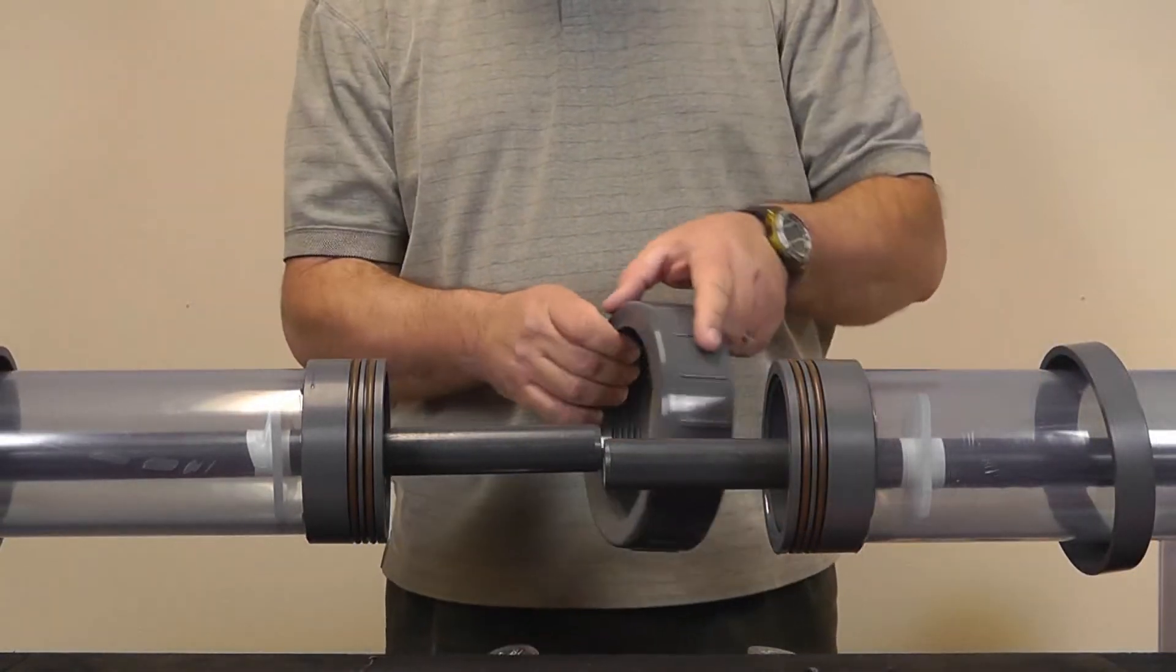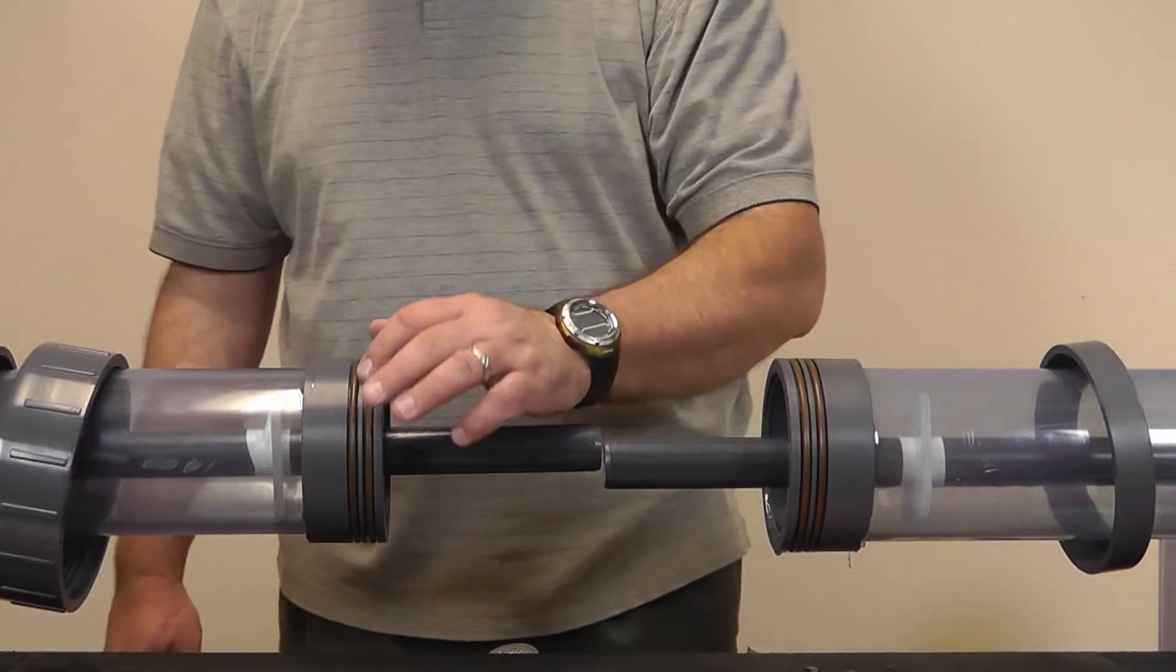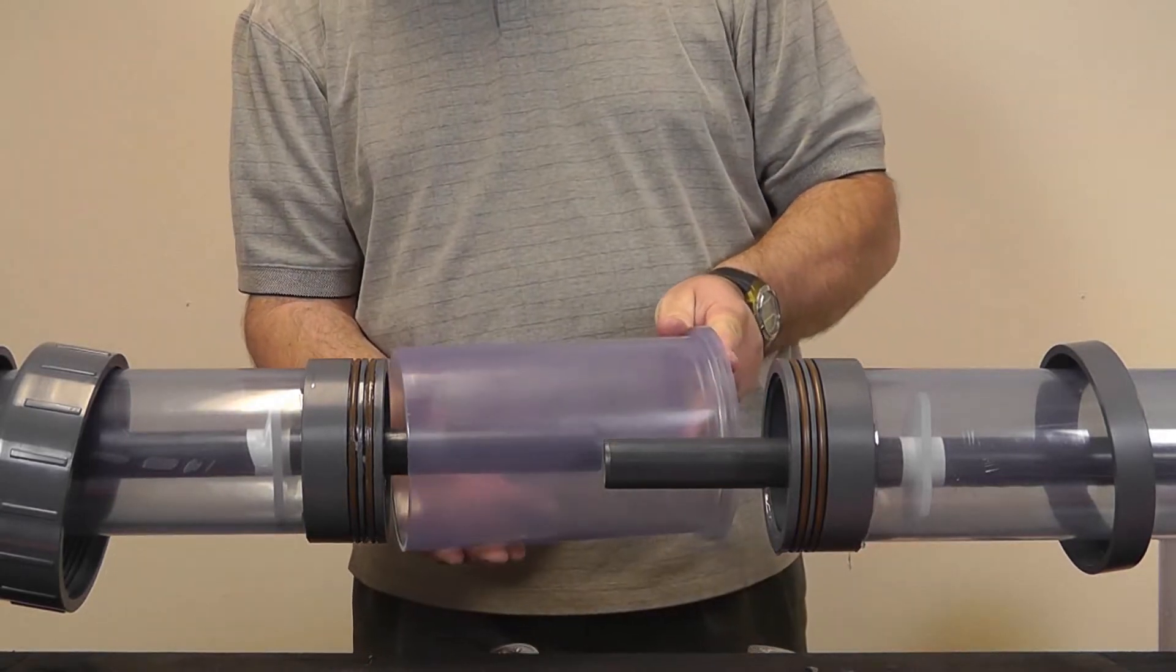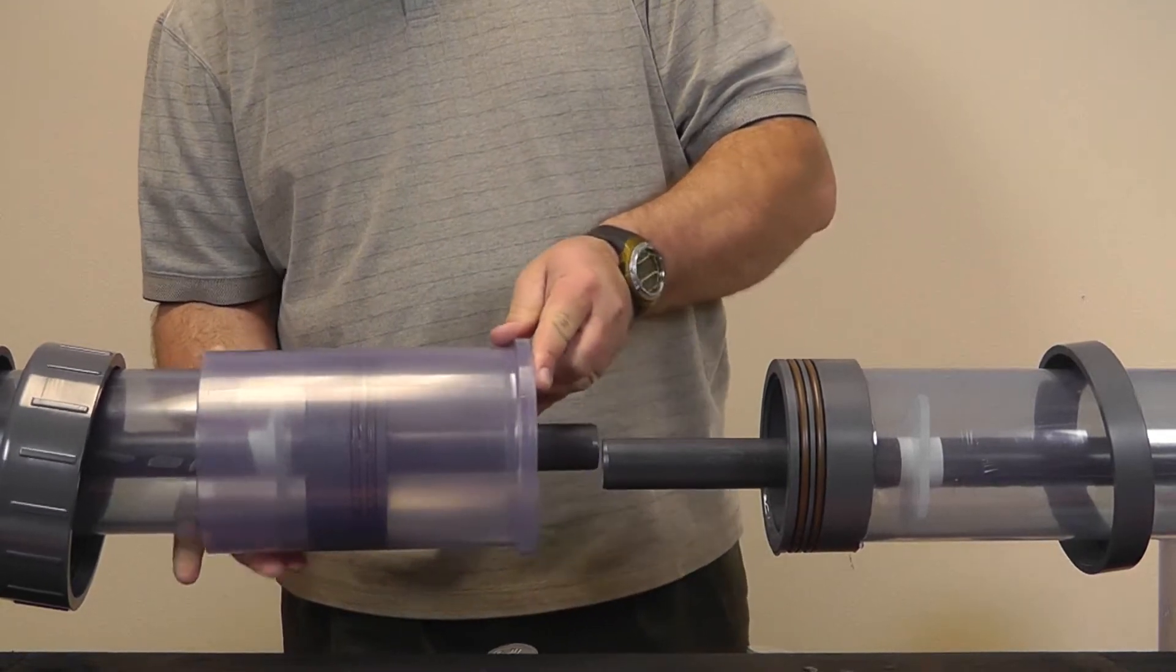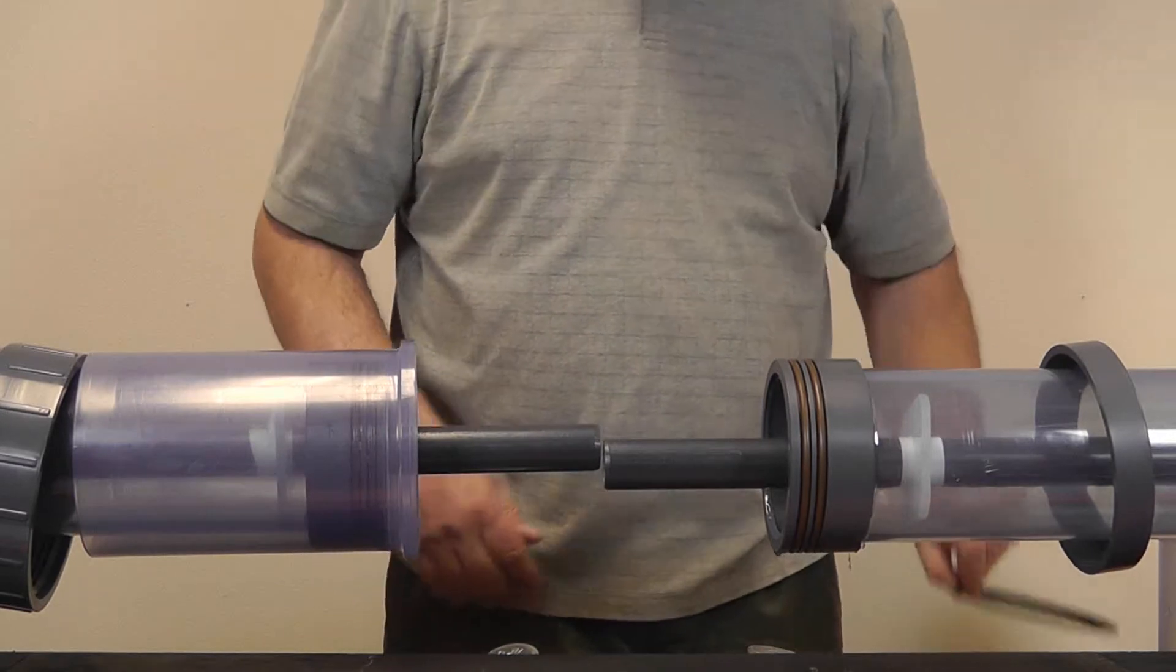Now install the union nut, then using the supplied silicone, apply silicone to the O-rings on the seal carriers, making sure that you don't get any silicone on any of the PVC that needs to be solvent cemented. Then install the two body halves and install the union O-ring.